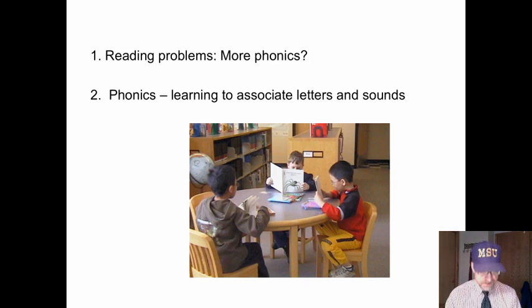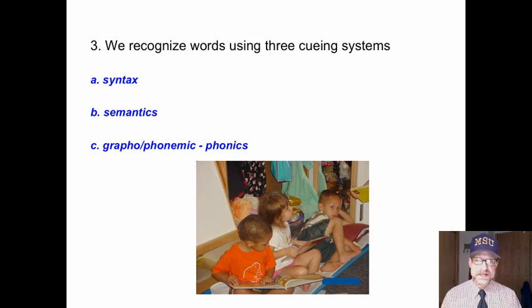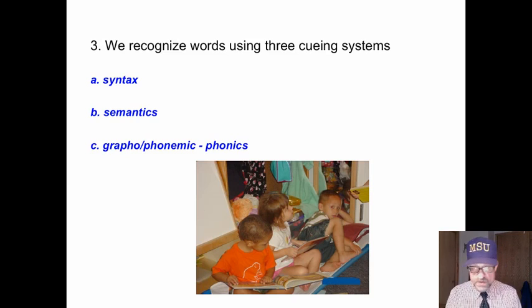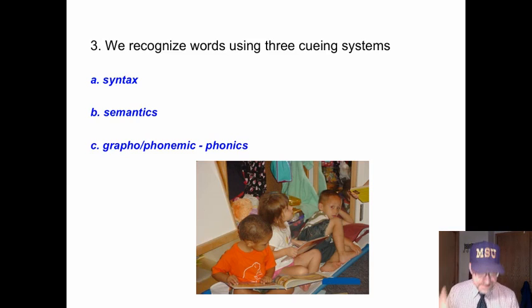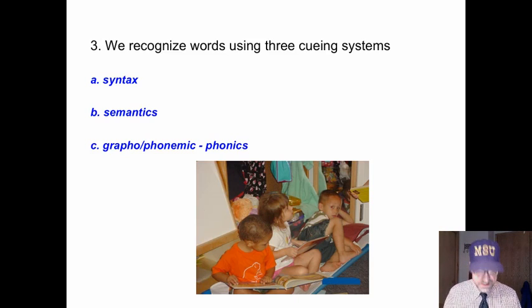Defining our terms: phonics is learning to associate letters and sounds. However, when we read, we use not one but three types of cueing system. Cueing means we cue the brain as we're reading along to recognize a word. We use syntax, which is the grammar of the sentence — the word order, the function of the word, and word endings all help us understand or recognize words.